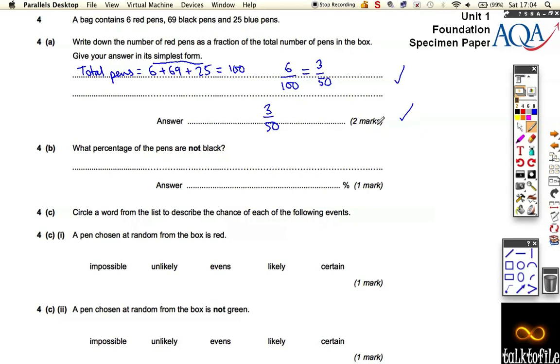What percentage of the pens are not black? Well, not black equals 31. That means 31 out of 100, so it's already easy for us to turn into a percentage. 31 out of 100 is just 31%. Easy?